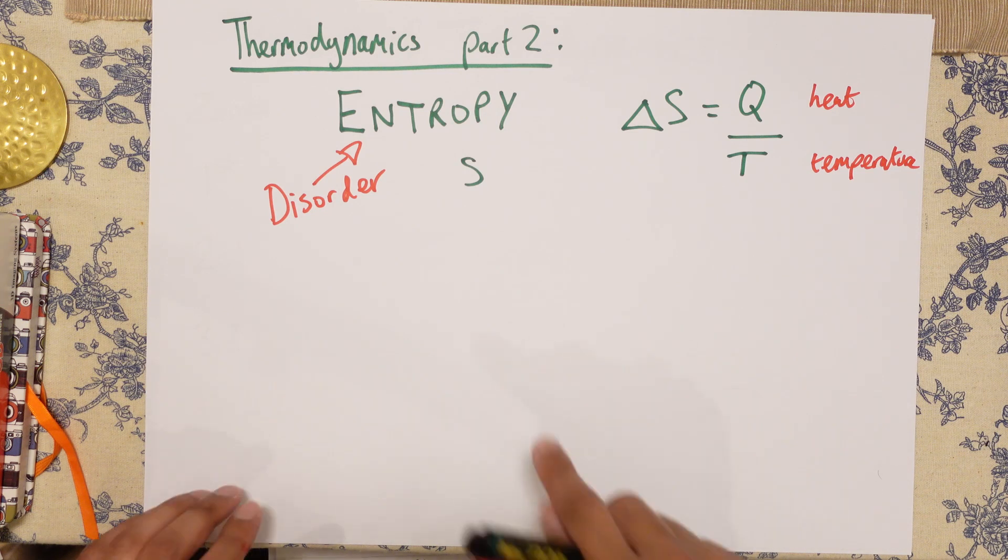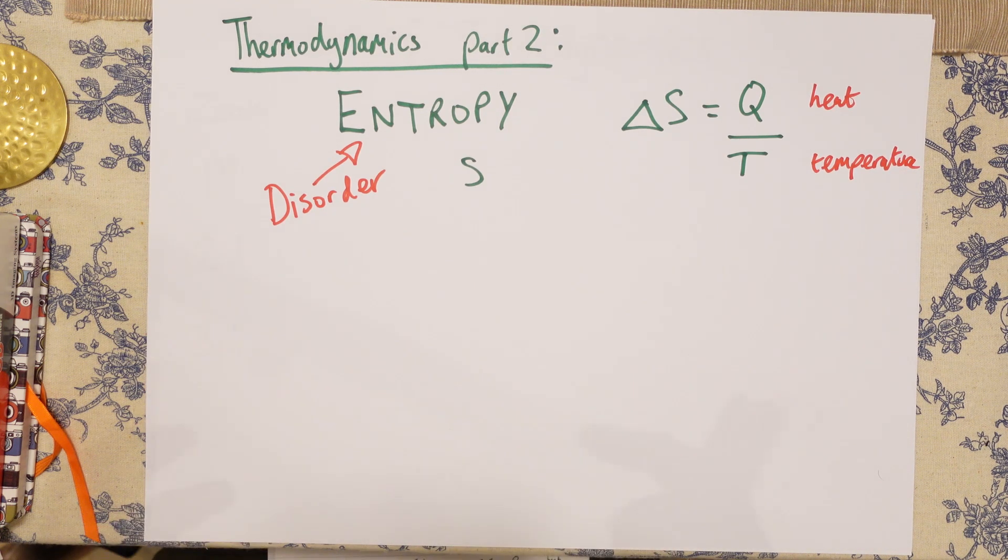And then over time, you end up with a little bit of disorder, things get messy. The universe is exactly the same—it has some disorder. And in fact, entropy never ever decreases. It either stays the same or it increases over time.